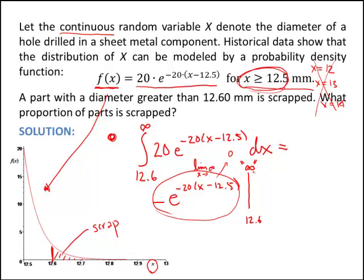So, when I evaluate as limit as x goes to infinity, I'm going to get 0. And then I'm going to subtract off, putting 12.6 into that function, negative e to the negative 20 times 12.6 minus 12.5.